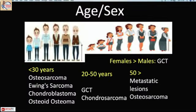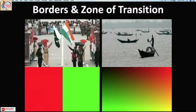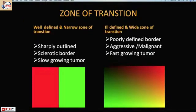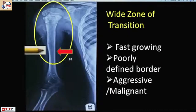On radiology, knowing borders and zones of transition is important. Using an analogy: India's land border with Nepal is very well defined, while sea borders with Sri Lanka and Pakistan are ill-defined. The well-defined Wagah border analogy corresponds to benign tumors — sharply outlined, sclerotic borders. Ill-defined borders most probably indicate metastatic or malignant bone tumors. A benign bone tumor can be drawn with a pen or pencil — a very sharply outlined border.